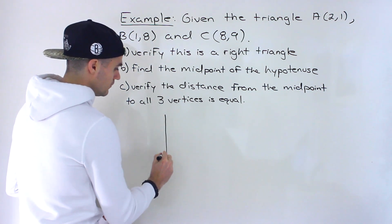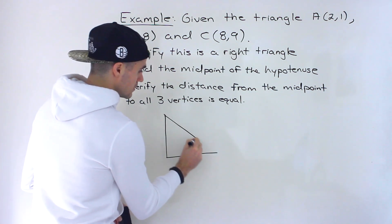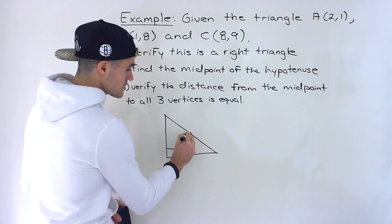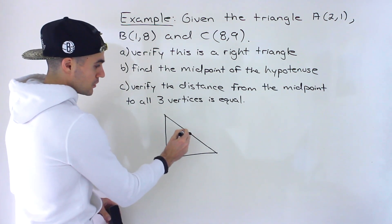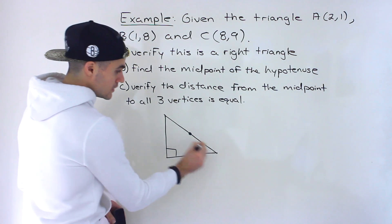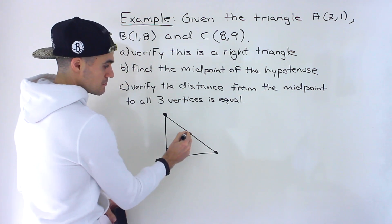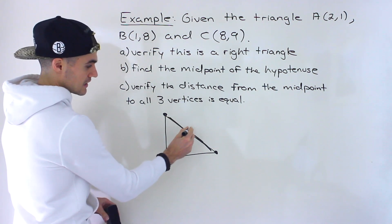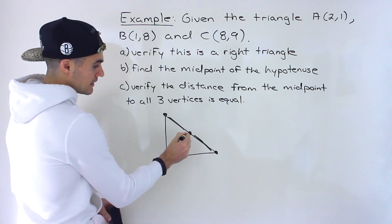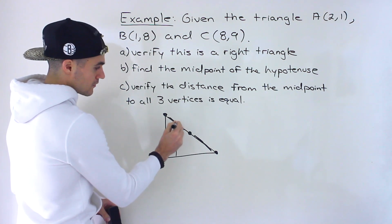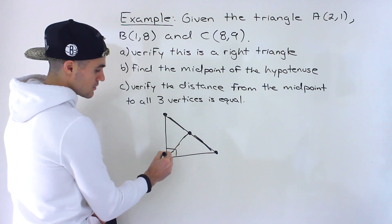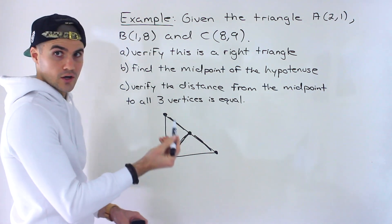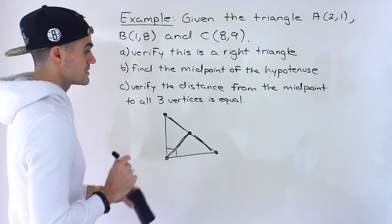In general, if you have a right triangle and you find the midpoint on the hypotenuse, the distance from that midpoint to all three vertices is going to be equal. The two distances along the hypotenuse are obviously equal since it's the midpoint, cutting that side in half, but it's also going to equal the distance to the third vertex. We're going to show this holds for this specific triangle.